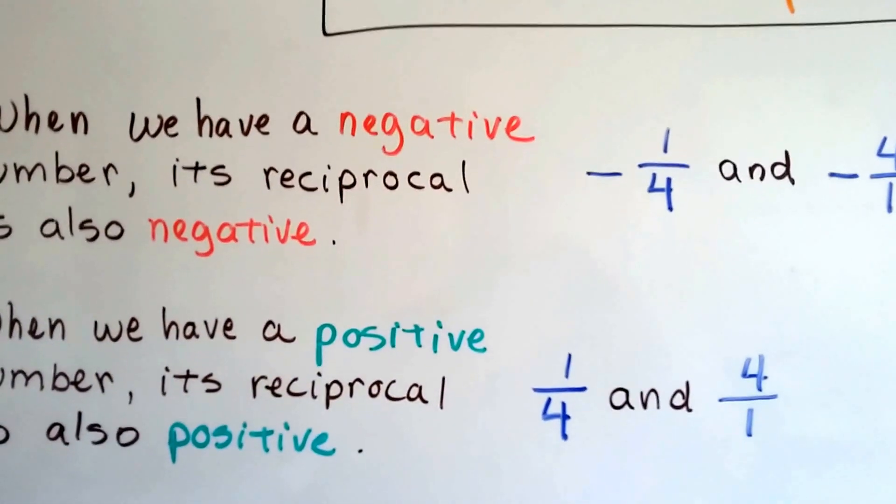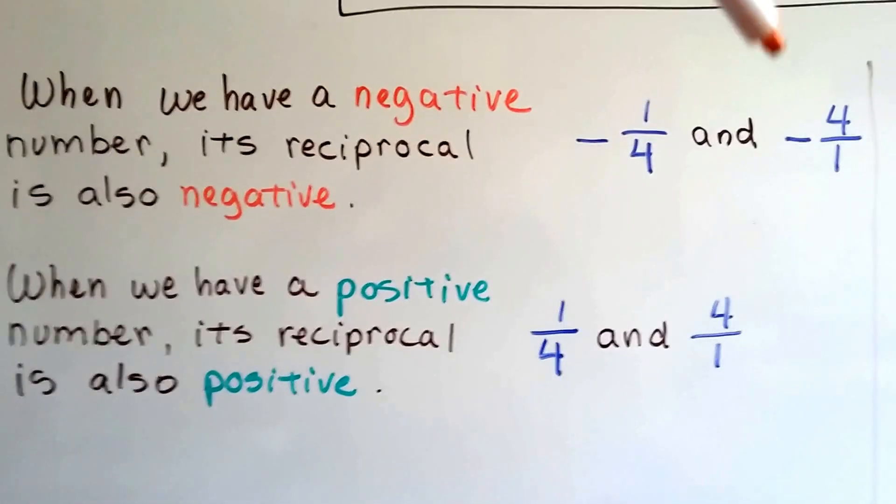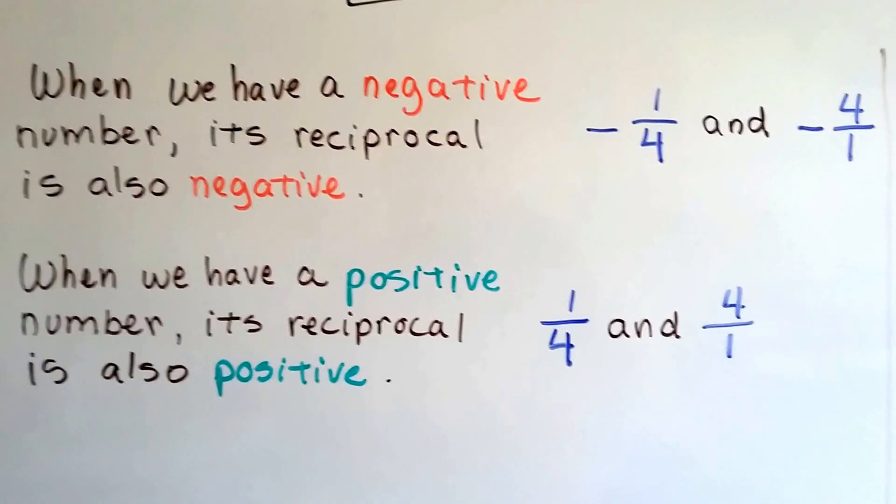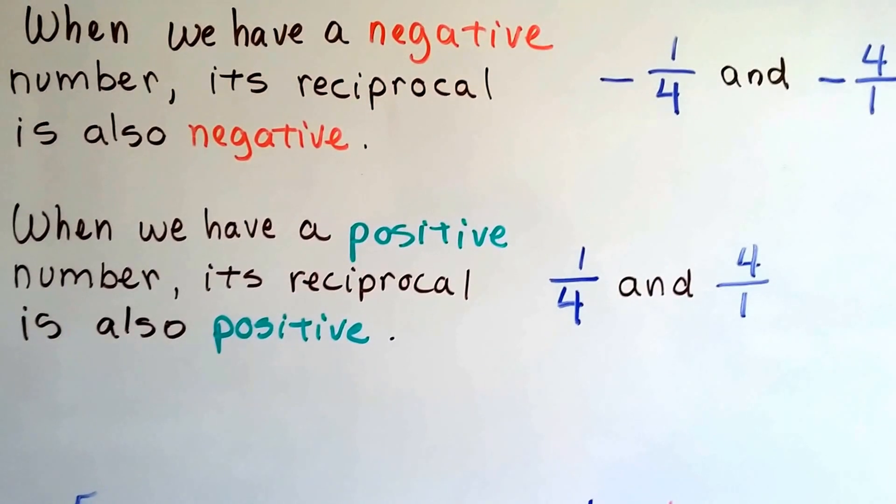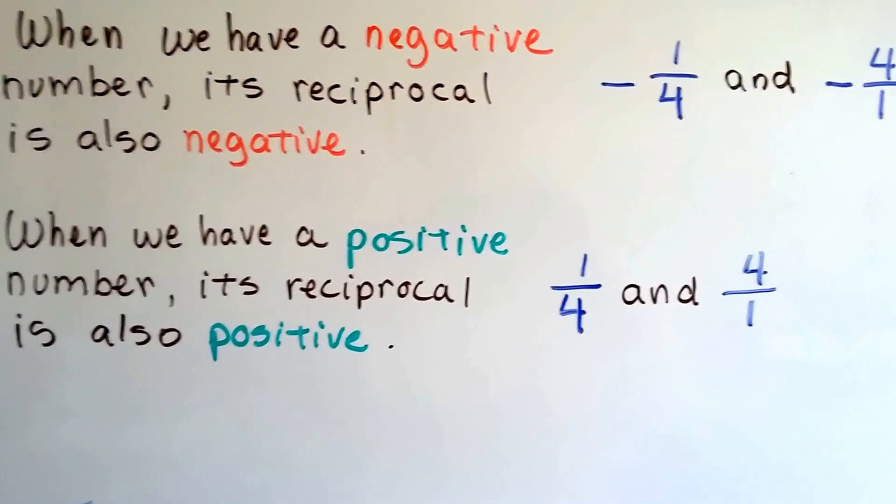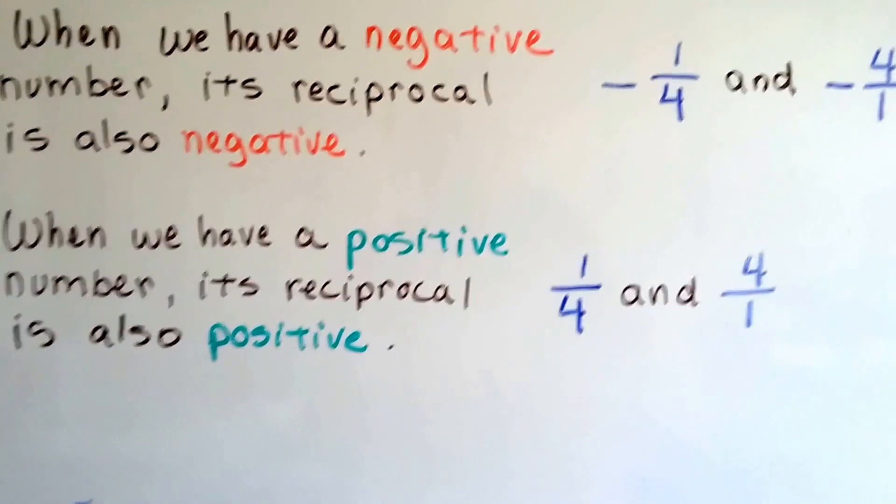When we have a negative number, its reciprocal is also negative. So if we have negative one-fourth, its reciprocal is going to be negative 4 over 1. We flip the numerator and denominator. When we have a positive number, its reciprocal is also positive. So they keep their own sign. One-fourth would be 4 over 1.